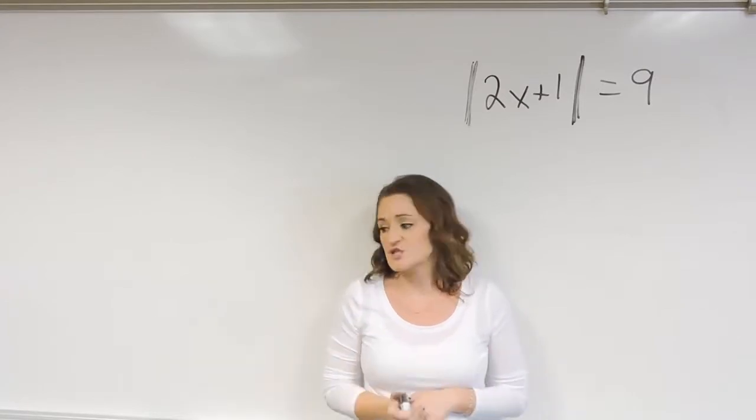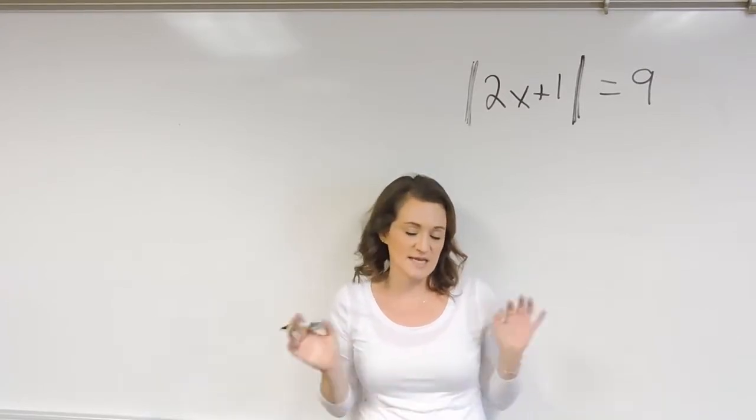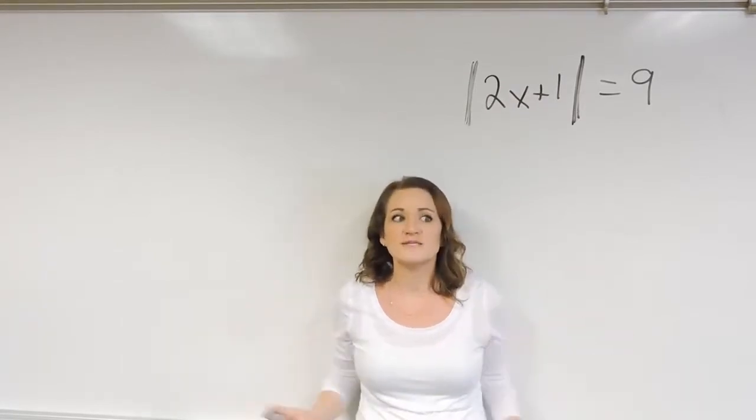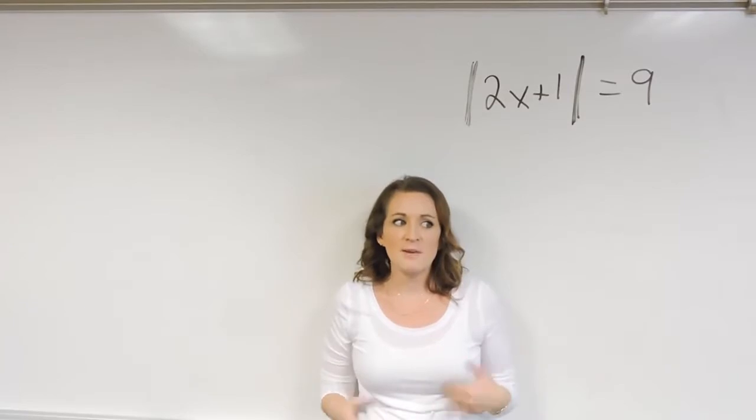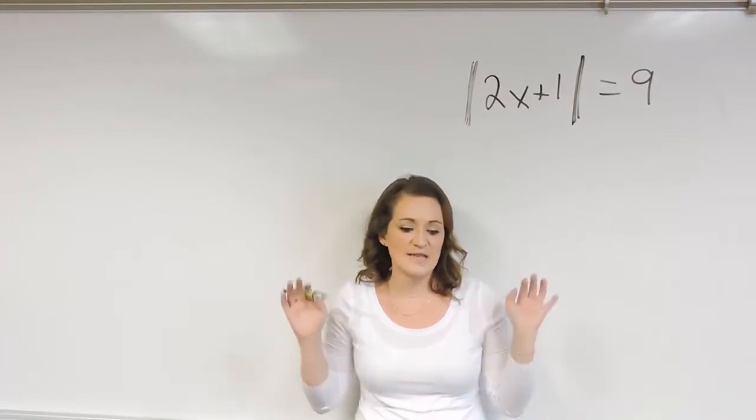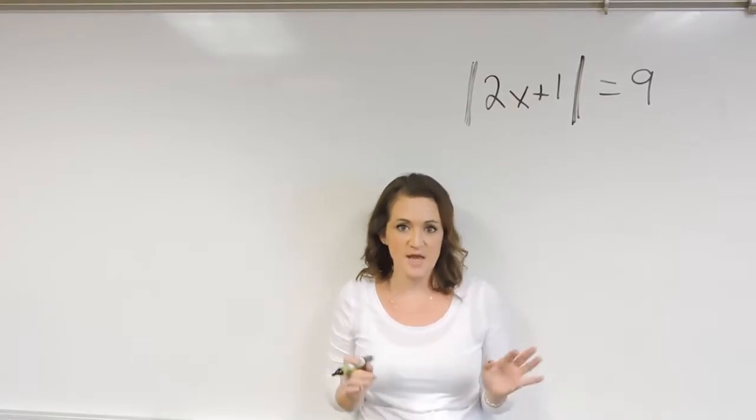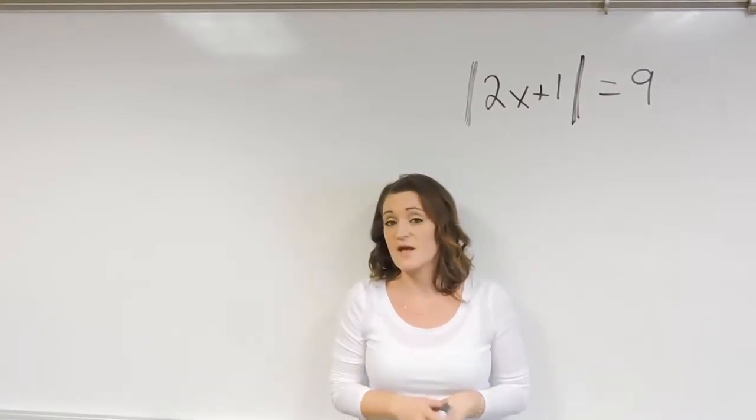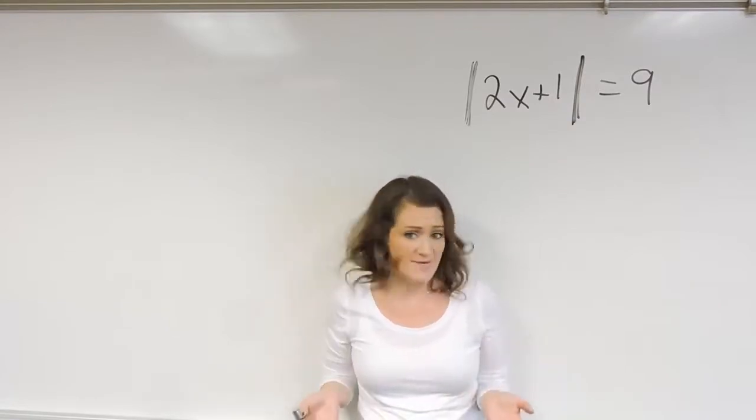The definition of absolute value says that it is the distance a number is away from zero. So if you think about distance, the main thing about absolute value that most people do remember is that absolute value is always positive. If you have something inside absolute value that's negative, it always turns positive. And that makes sense because you can't have a negative distance.